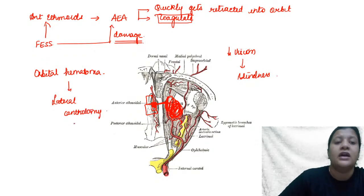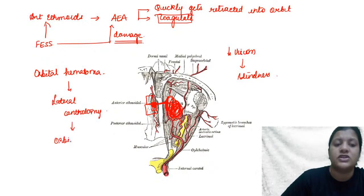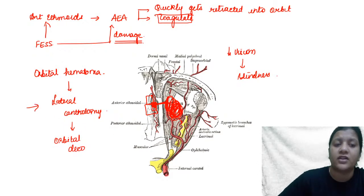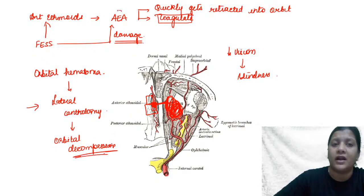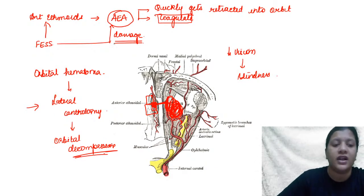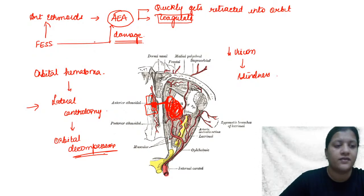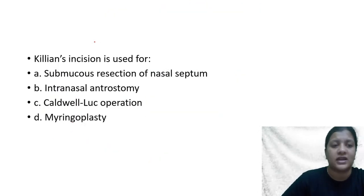After lateral canthotomy you will proceed to orbital decompression, which takes more time. So the first step to decompress is lateral canthotomy, followed by orbital decompression. That covers anterior ethmoidal artery bleeding and its clinical significance during functional endoscopic sinus surgery.